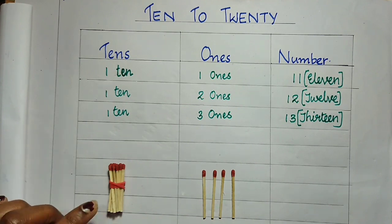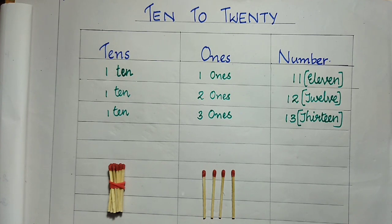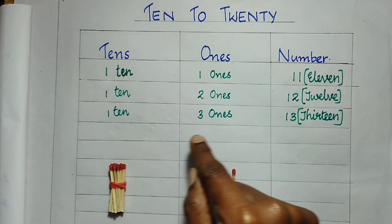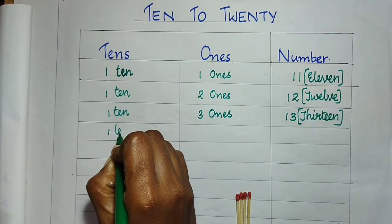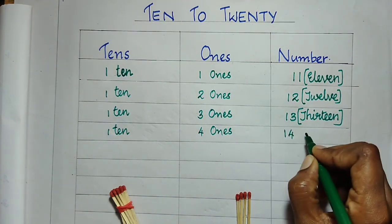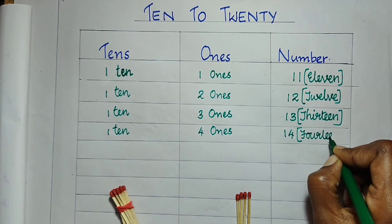Now, we have a bundle of 10 math sticks and 4 more math sticks. How many math sticks are there in total? This is a bundle of 10 — then 11, 12, 13, 14. So, 10 plus 4 is 14. 1 ten and 4 ones is 14. Let us write 14 here. What is the spelling of 14? F-O-U-R-T-E-E-N. 14.